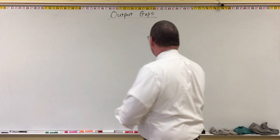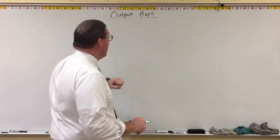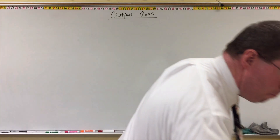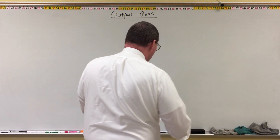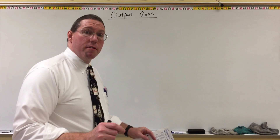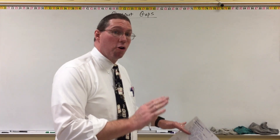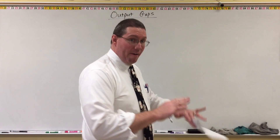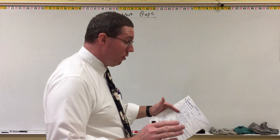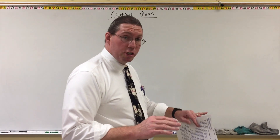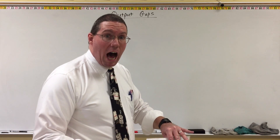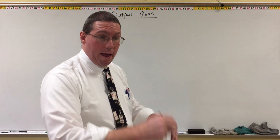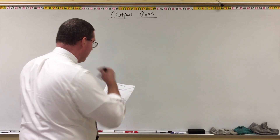That's what we mean when we say output gaps. So let's go ahead and graph both natural real GDP and the business cycle on the same graph. We've graphed them separately, but we haven't put them together. To understand the relationship in the macro economy, ideally we should put them both together, and it tells us some really neat things.